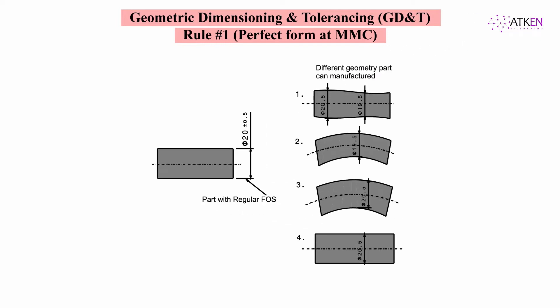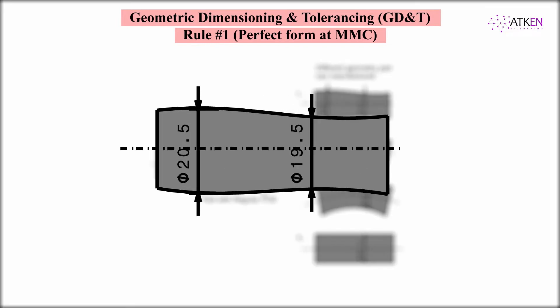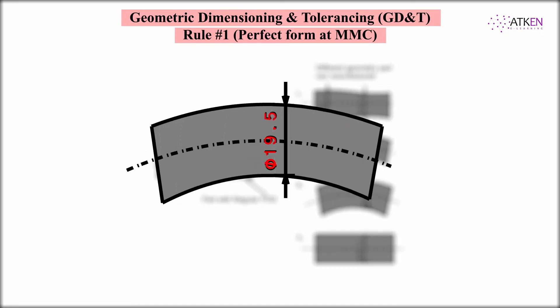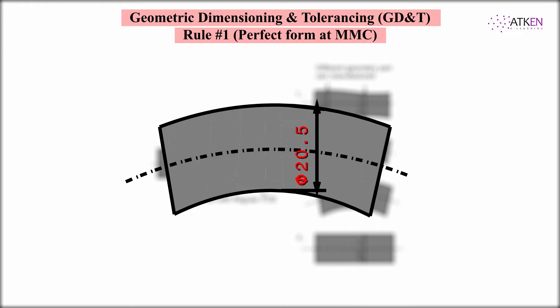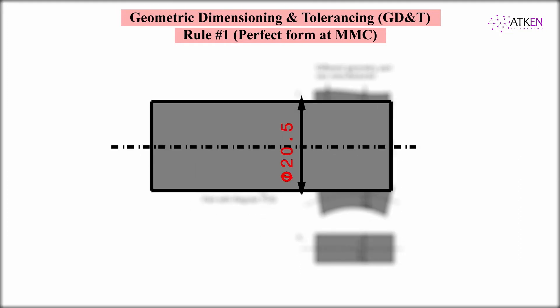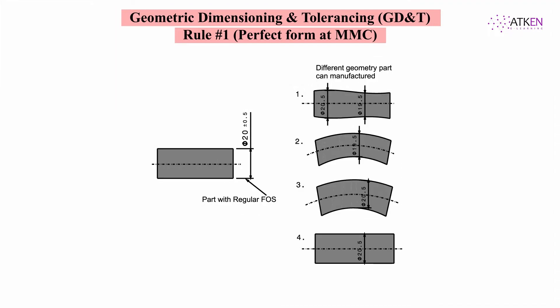After manufacturing, we can have different geometries of parts. Some are shown here: a part having form error with a maximum limit of 20.5 and minimum limit of 19.5; a part produced at minimum limit size with a bow shape; a part produced at maximum limit with a bow shape; and a part produced at maximum limit and perfectly straight.